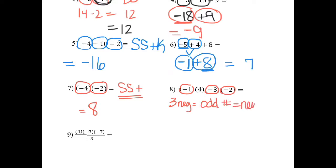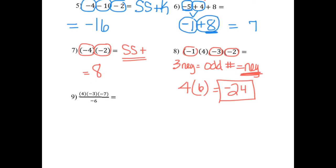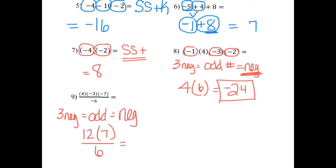Let's practice. What is 1 times 4? 4. What is 3 times 2? 6. What is 4 times 6? For the next problem, I know my final answer is going to be negative. 4 times 3 is 12. 5 times 7 divided by 6. Notice I'm ignoring the negatives while I multiply, and then I apply the sign at the end.